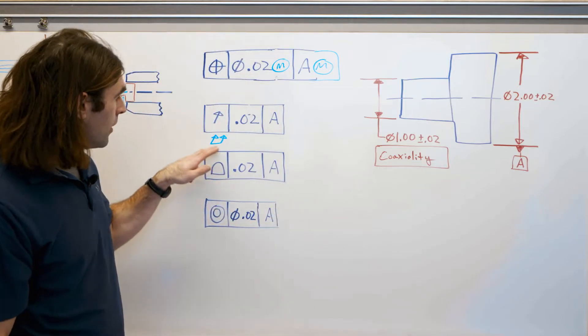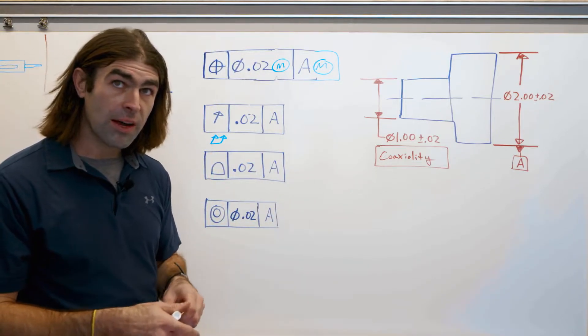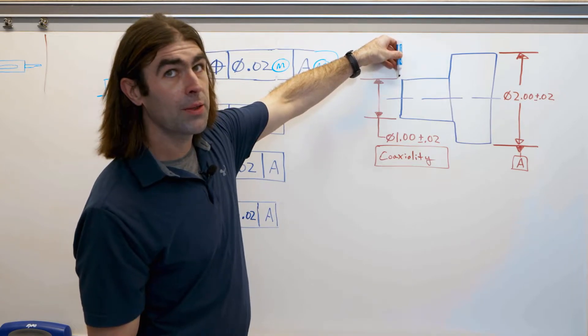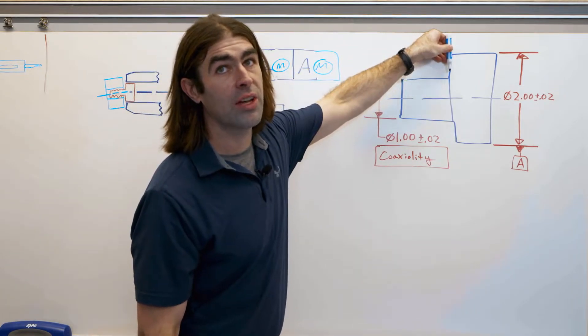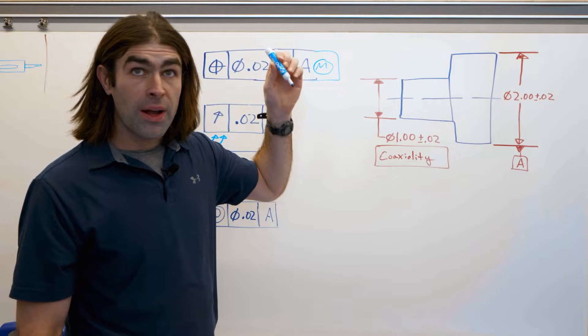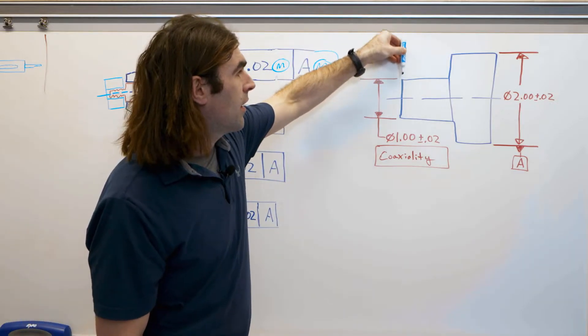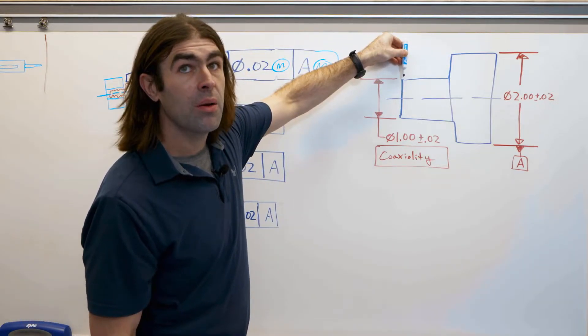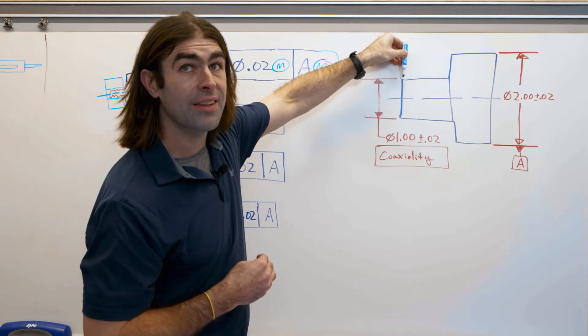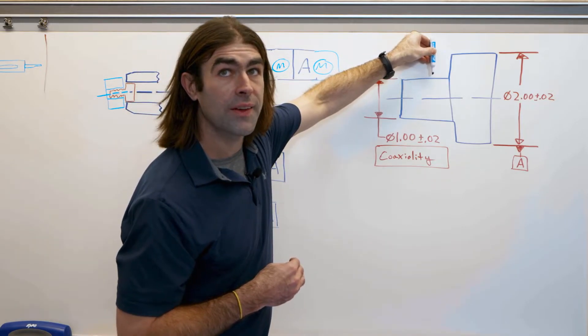So circular run out gives you circularity as well as location of the surface to an axis. Total run out is a different requirement. So circular run out you check here, spin 360, check here, check here, check here. Total run out you have to keep the indicator parallel to the axis of the datum and move it like this.